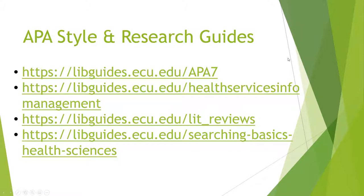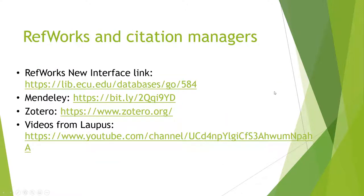We have a bunch of research guides that are really helpful. The most important one is the APA 7th Edition guide. We also have a guide for health services and information management, a guide on how to conduct a lit review, and a LibGuide on searching basics — so if you want more information on those ANDs and ORs, go to that LibGuide. If you'd like to use a citation manager to keep track of your references and generate a references list, we have access to RefWorks at ECU. I also recommend the open-source options Mendeley and Zotero. For 10 to 15 references you can probably just type them out by hand, but we do have a YouTube channel with videos on how to use RefWorks.